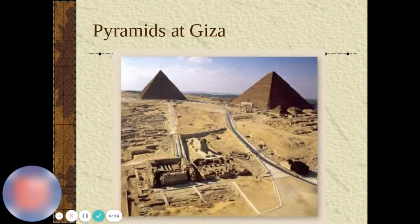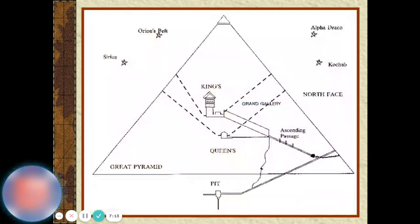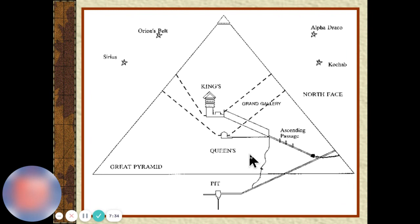Here are some pyramids photographed in recent times — around 2020 or 2021. Here's how they set them up: you've got the king's chamber in the middle, the queen's chamber on the bottom, and then the passageway leading up to it. They would start building and designing these when the king first took reign — perhaps at 20 years old — because it would take that long to get it done before he died.